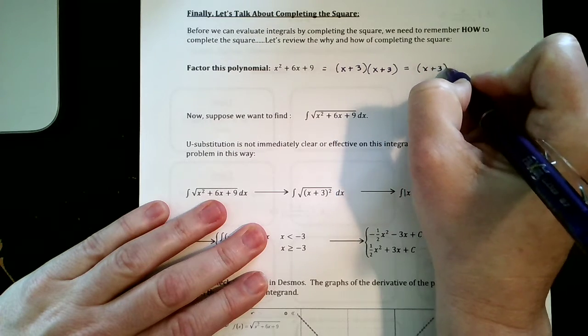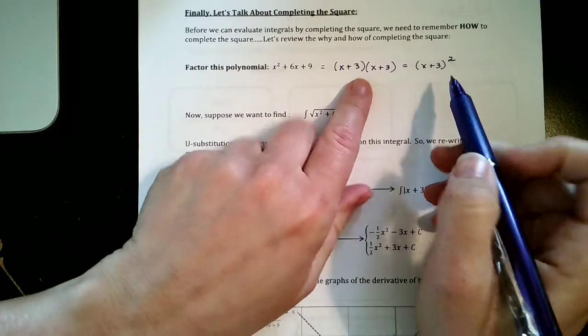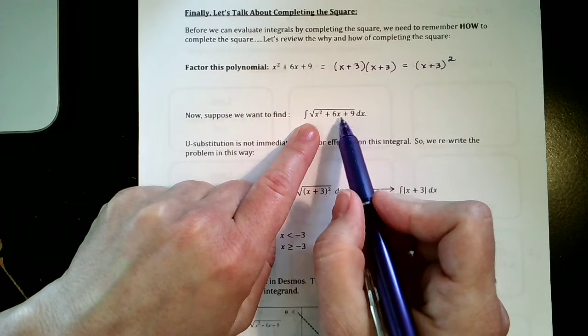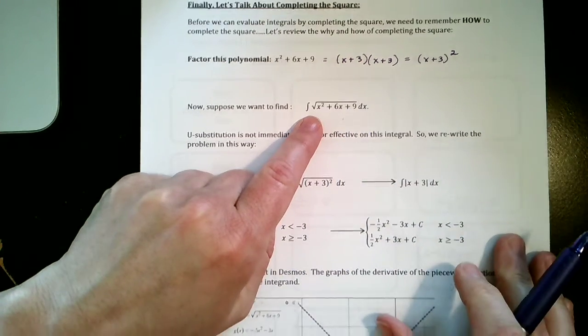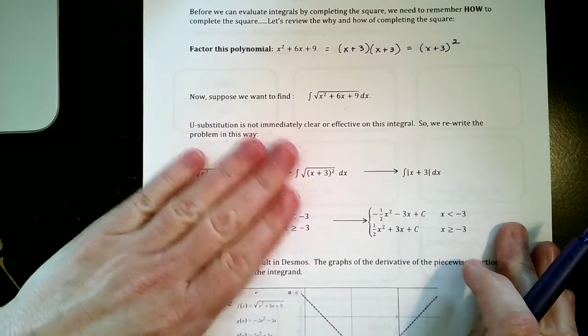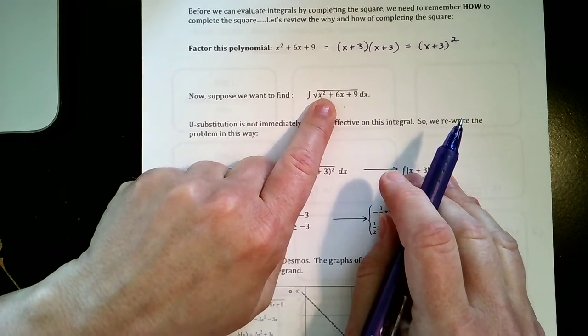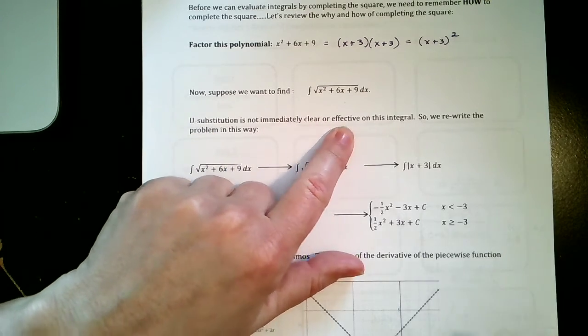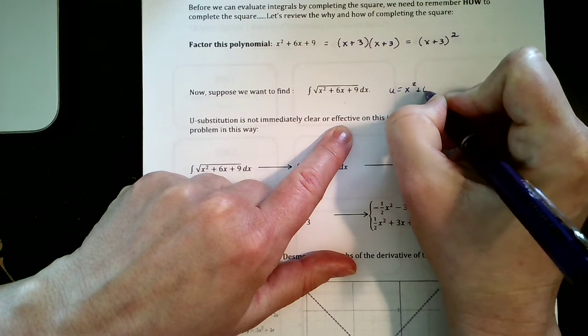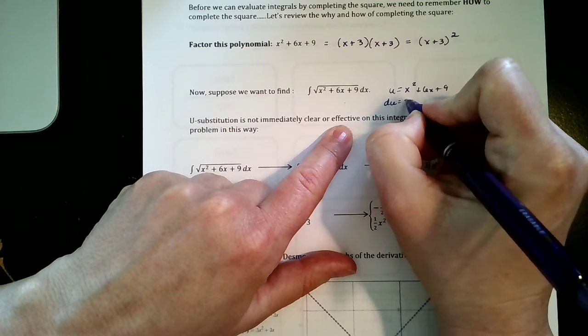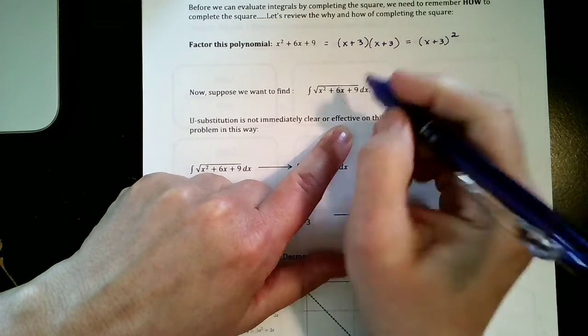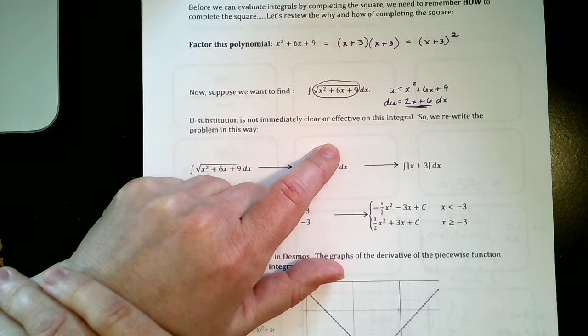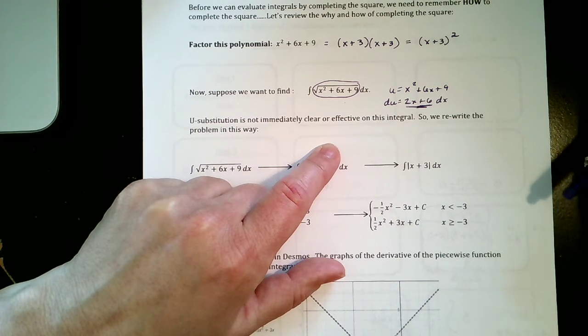Suppose this is the problem that we want to do on the AP exam. This could be in the denominator of an integral and you would have to go through this process. U-substitution is not immediately clear or effective on this integral. If we did u-substitution we get x² + 6x + 9, so du is equal to 2x + 6. This would become u^(1/2) and I don't have any of this stuff hanging out on the outside, so u-substitution is not effective on this integral.